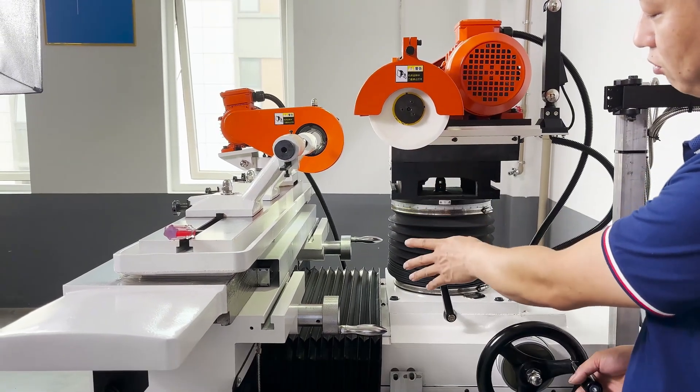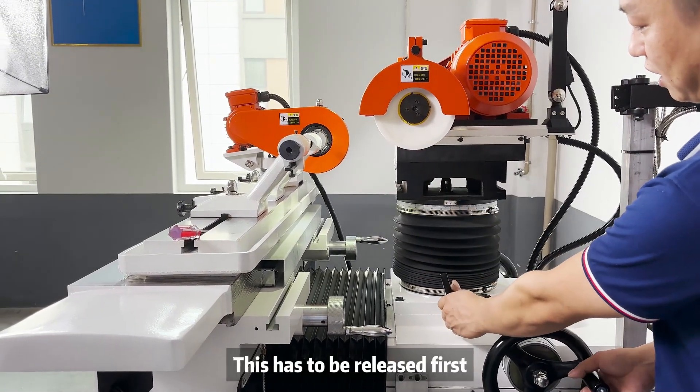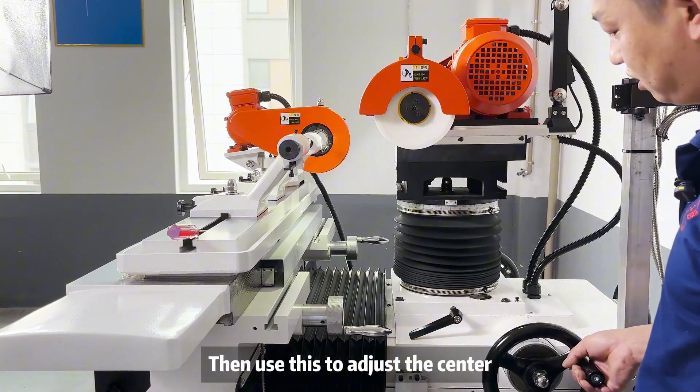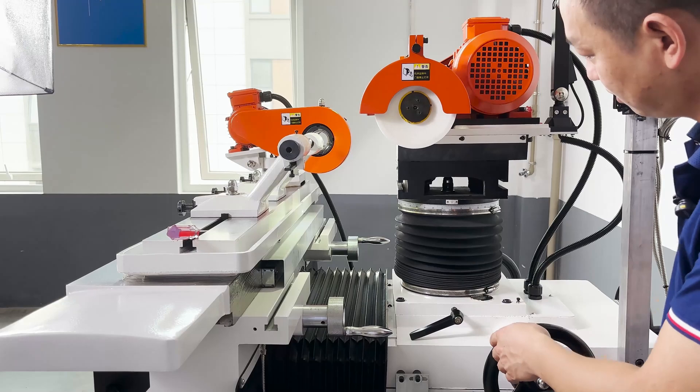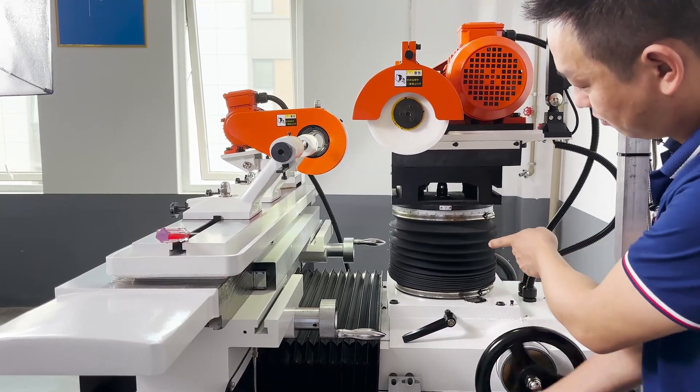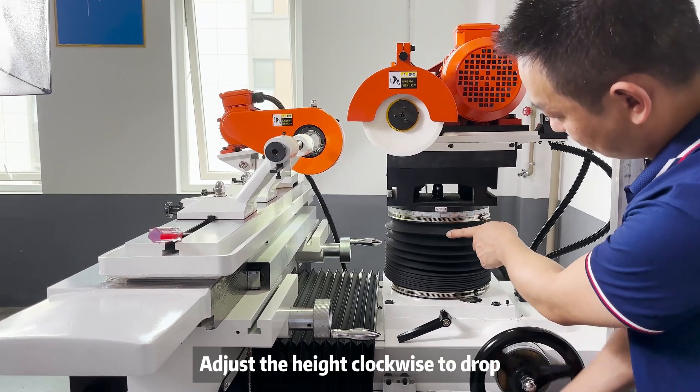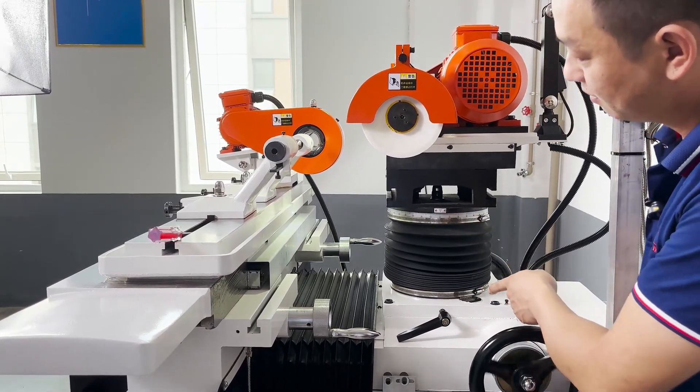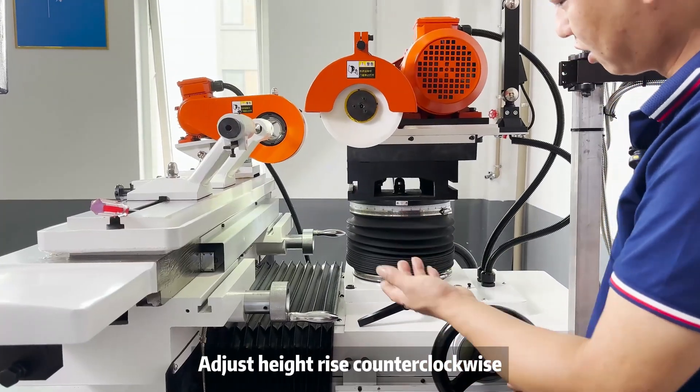If you want to adjust the center height of the grinding wheel, this has to be released first. Then use this to adjust the center. Adjust the height clockwise to drop. Adjust the height counterclockwise to rise.